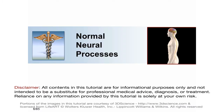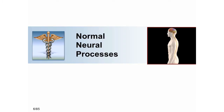In the first section, we will review a few critical concepts of normal neural processes. Neural anatomy was covered in an earlier tutorial, and it may be a good idea to review that tutorial again before learning the material presented here.